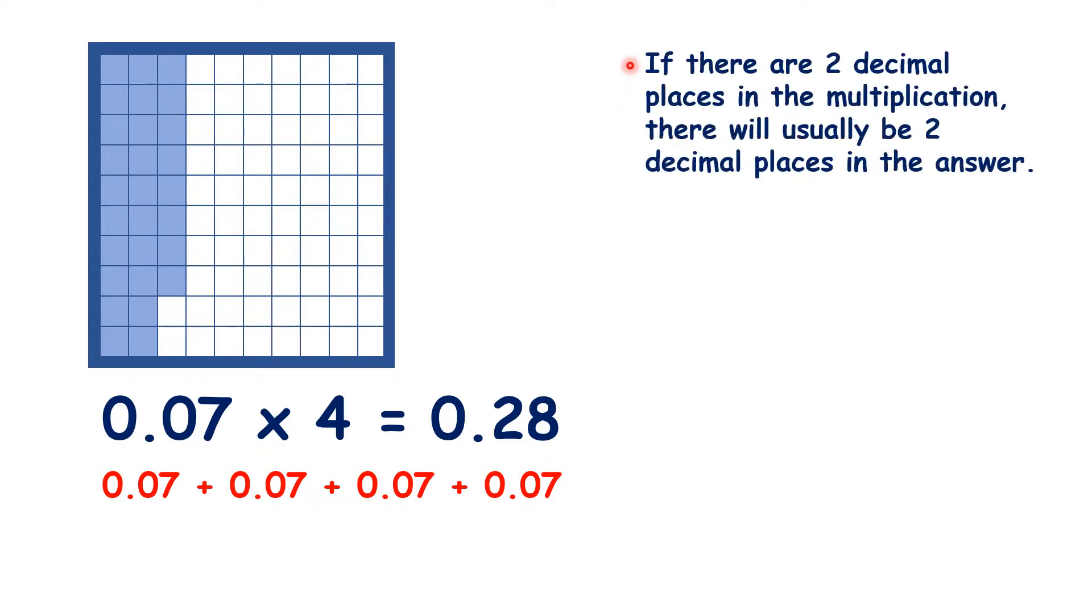So if there are two decimal places in the multiplication, if there are two numbers after the decimal point, there will usually be two decimal places in the answer. So pause the video and see if you can answer these questions.